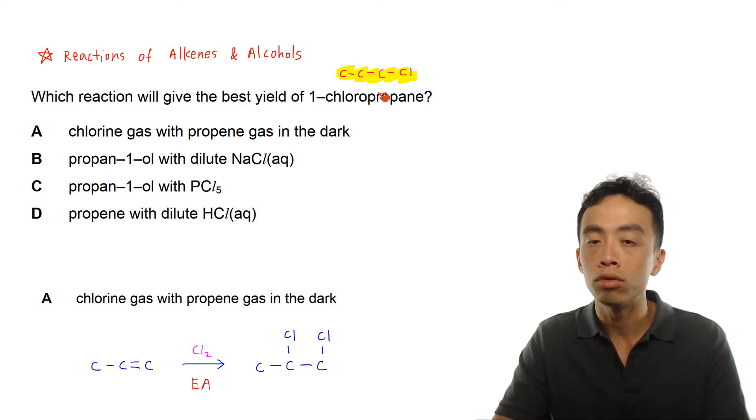Now 1-chloropropane of course is a halogenoalkane, but if I run through options A, B, C, D, it is actually targeting alkenes and alcohol.